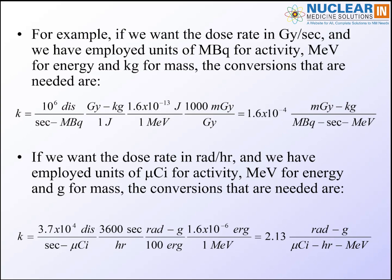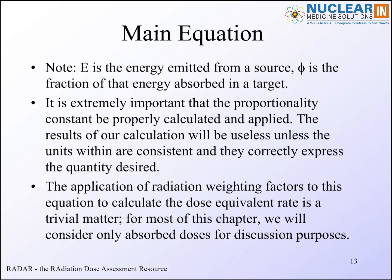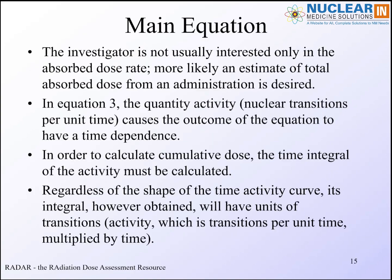So keeping these units straight is difficult. That's why I use horizontal lines so I can see very easily what cancels with what. And in the older units, if you had activity in microcuries, energy in MeV, mass in grams, I won't go through all the details here, but your factor is 2.13 to get your dose rate in rad per hour. So now we have rad per hour or gray per second or whatever you wish. Now apply radiation weighting factor to get rem and sievert is easy. We saw that before, and that's pretty trivial.